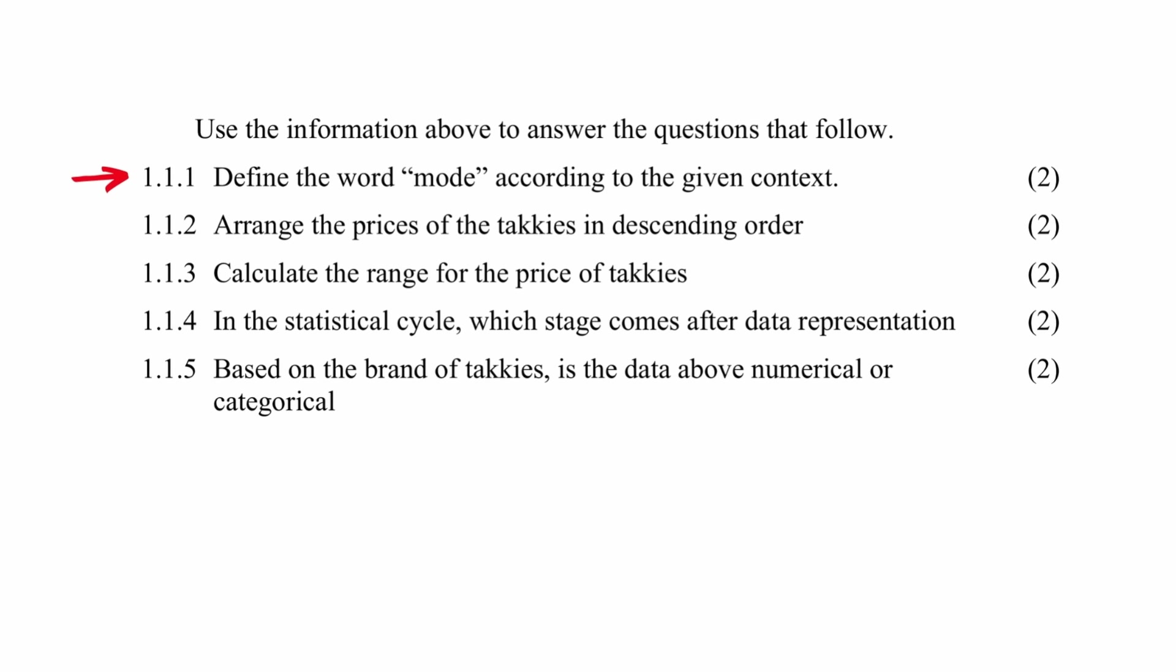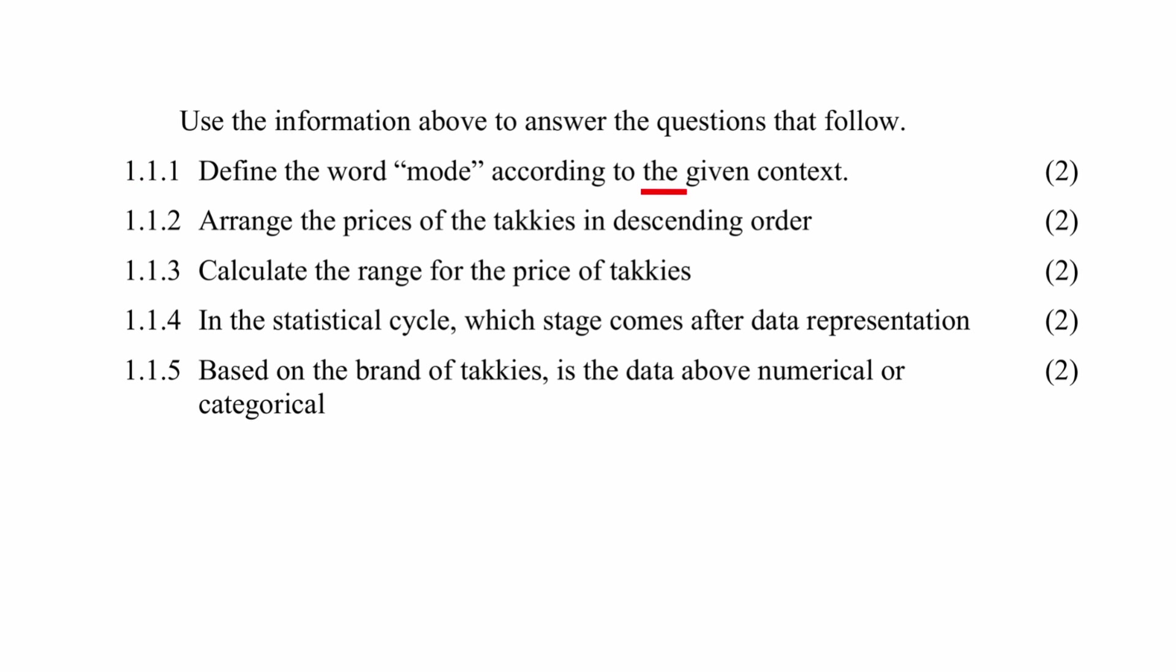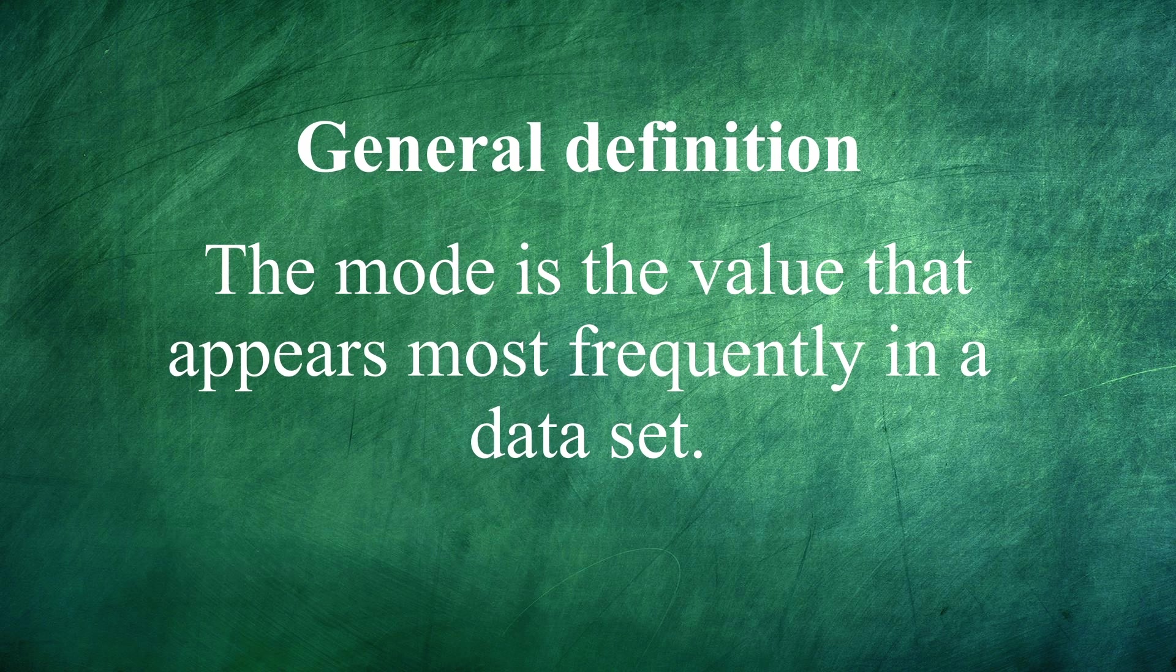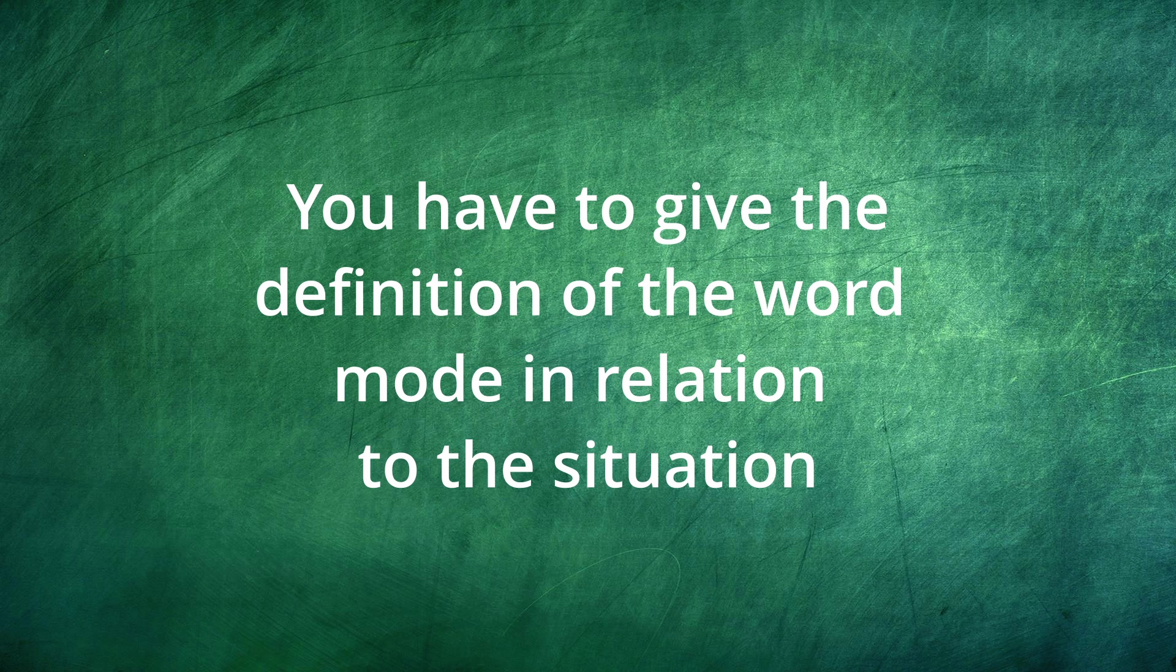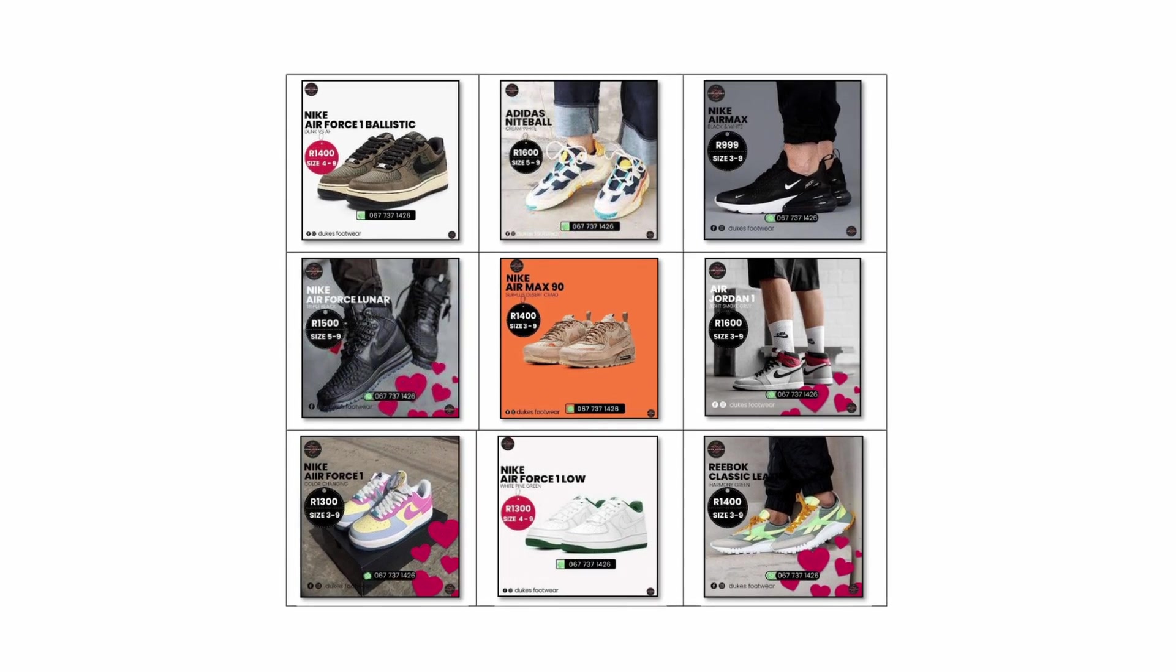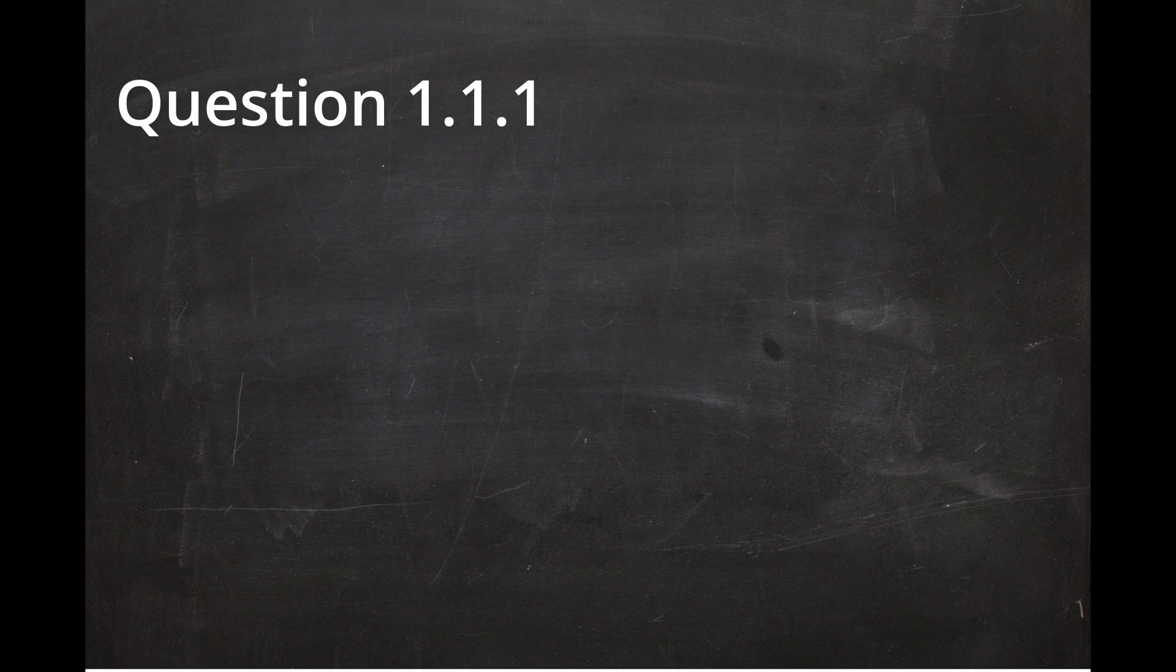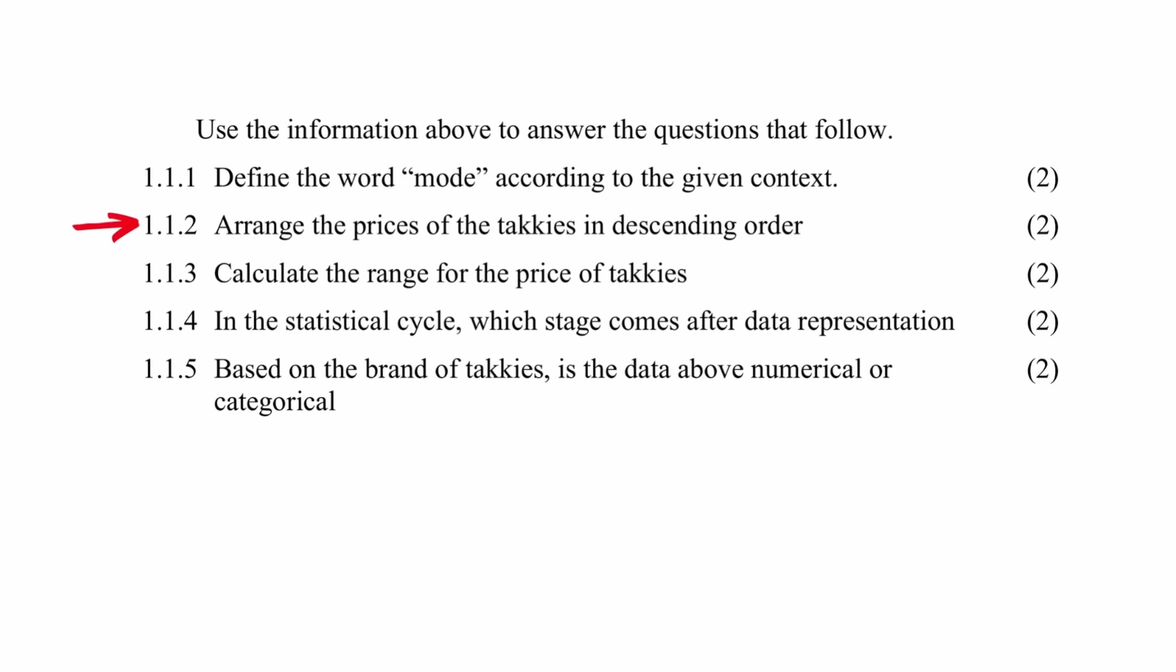In question 1.1.1, you have to define the word mode according to the given context. The given context part here is important. Simply writing down the definition of mode won't get you the full marks. You have to give the definition of the word mode in relation to the situation, and the situation here is the catalog of takkies. So an acceptable answer is: the takkie price that appears the most times in the catalog.